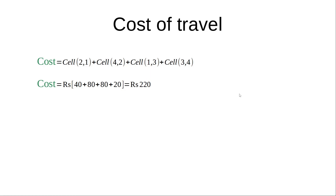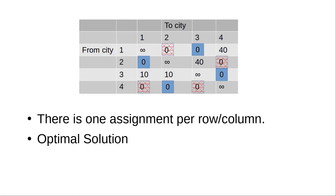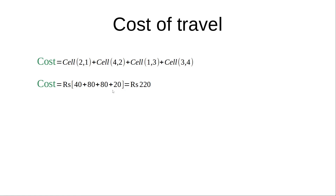The cost of travel is the sum of the cost values in the assigned cells from the original table: cell (2,1), cell (1,3), cell (3,4), and cell (4,2). So the total cost is 40 + 80 + 80 + 20 = 220 rupees. This has been a complete demonstration of taking an assignment problem and solving it iteratively until reaching the optimal solution.